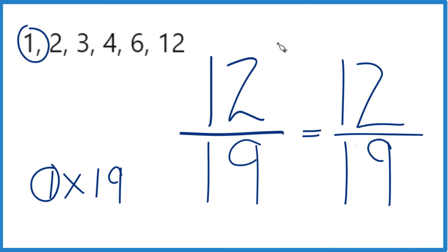That means that this fraction here, 12/19, it's already simplified. We can't reduce it any further. It's in lowest terms. That's how you do it.